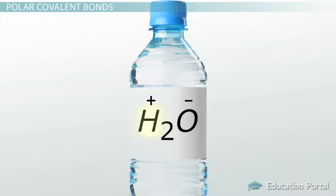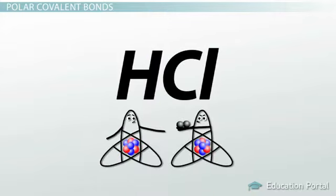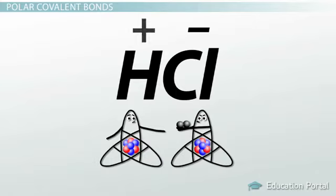Another example of a polar covalent bond is between hydrogen and chlorine atoms. In this bond, the chlorine atom spends more time with electrons than the hydrogen atom. Because of this unequal sharing, the chlorine atom carries a partial negative charge and the hydrogen atom carries a partial positive charge.